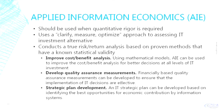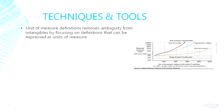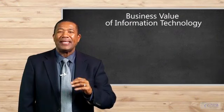The unit of measures definitions remove ambiguity from intangibles, such as customer satisfaction and strategic alignment, by focusing on definitions that can be expressed as specific units of measure.